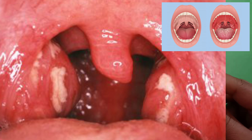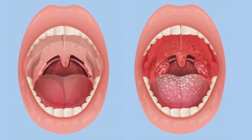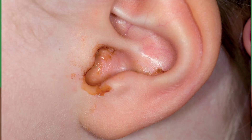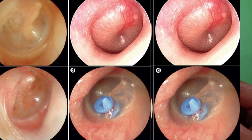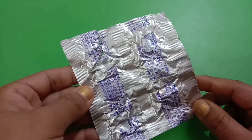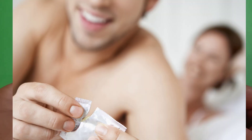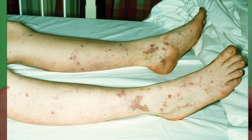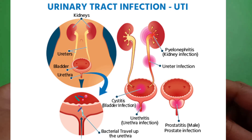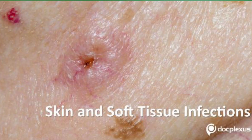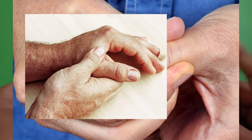Infections such as tonsillitis or pharyngitis — in other words, throat infections — and otitis media, or ear infections, and sinusitis. Other infections include gonorrhea, which is a sexually transmitted disease, Lyme disease, septicemia, pneumonia, urinary tract infections, skin infections, soft tissue or bone infections, and infections in the joints.